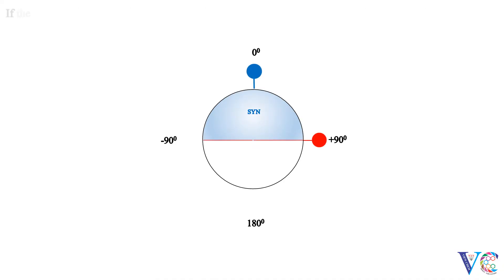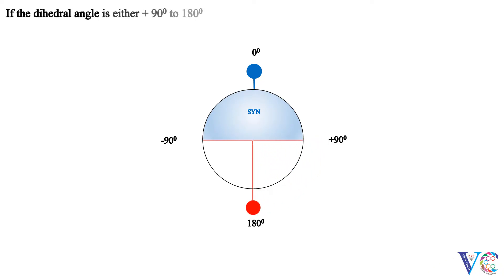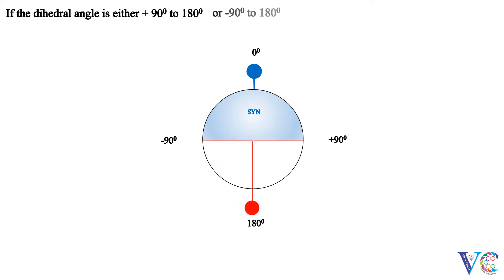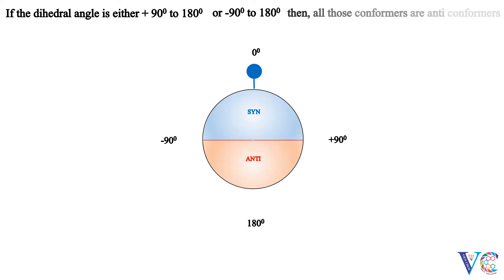If the dihedral angle is either plus 90 degrees to 180 degrees, or minus 90 degrees to 180 degrees, then all those conformers are anti conformers.